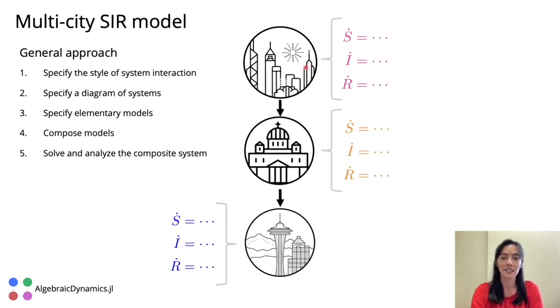Each city has a local, single-city SIR model, with its own susceptible, infected, and recovered populations. We're interested in what happens when we compose these local primitive models according to this diagram of systems.